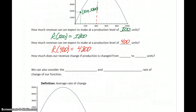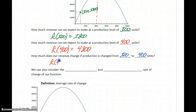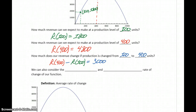Now we want to look at the question: how much does our revenue change if production is changed from 100 units to 400 units? We evaluate that by starting with our revenue at 400 units and subtracting our revenue at 100 units, giving us a total change of $3,000. So we're taking the revenue at the higher production level minus the revenue at the lower production level to find the change in revenue.